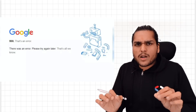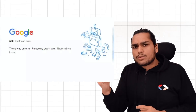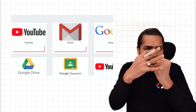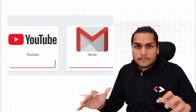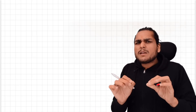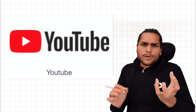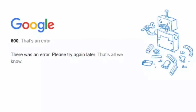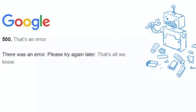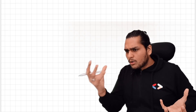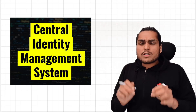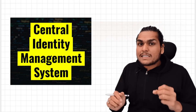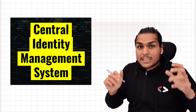Google was down for about 50 minutes two days back — and not just Google, every Google service which requires authentication was completely down. That means all services like YouTube or Google Drive which require your Google login, you won't be able to access any of those. The problem was not with Gmail, YouTube, or Google Drive, but with Google's Central Identity Management System.